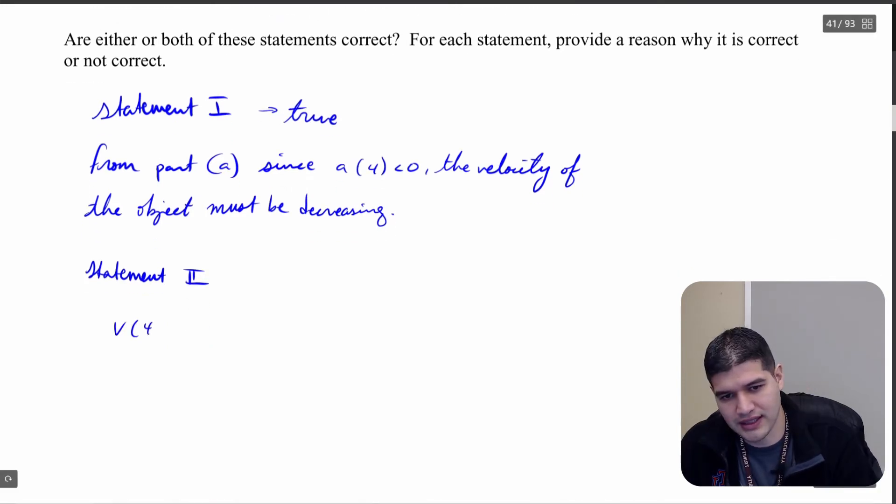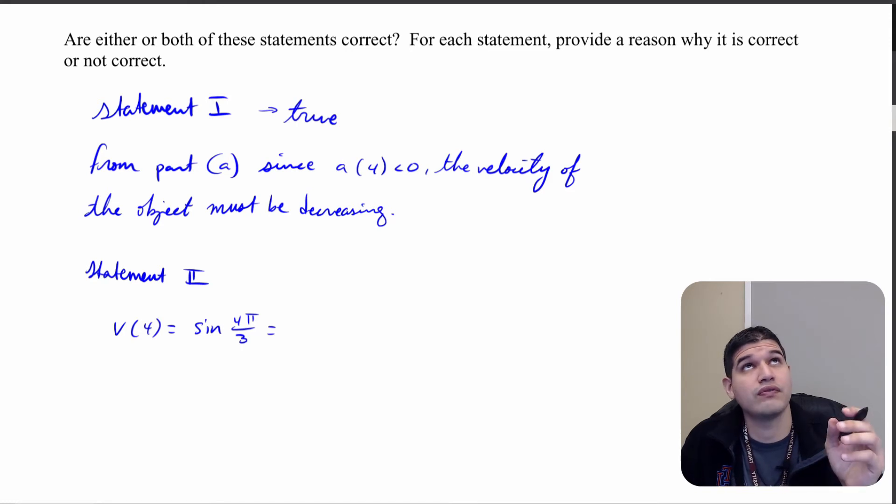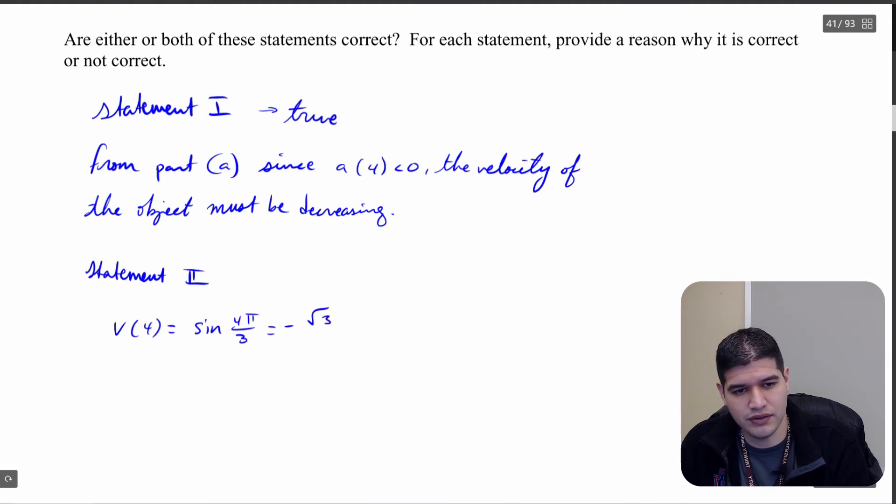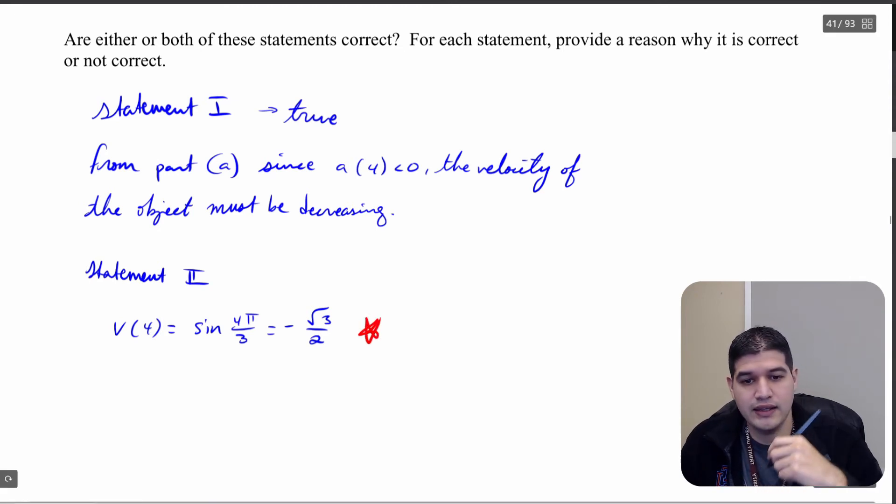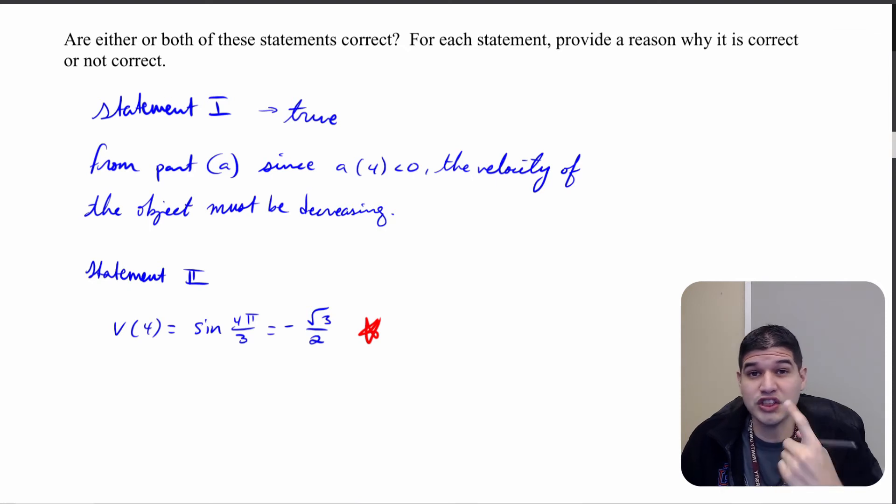So we want the velocity of 4, and we're already given that function, so I'm going to just get sine of 4 pi over 3. And let's see, 4 pi over 3, that's also on that negative side of the unit circle. The y is going to be below the x-axis and we get square root of 3 over 2. So that's going to be negative square root of 3 over 2. All right, so what I want to think about: here we have this is negative and the acceleration was also negative at 4.